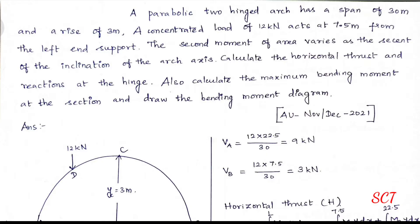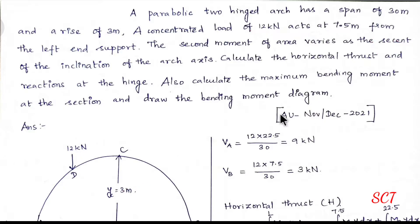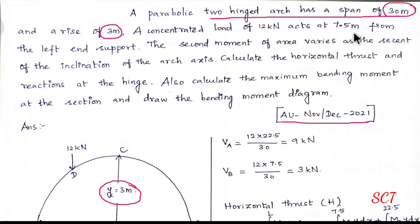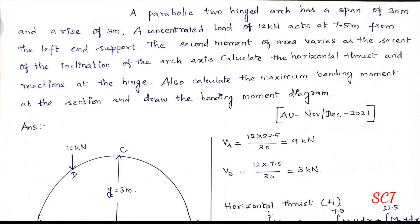Why do we have to look at the horizontal thrust? Let's look at this question. Anna University, November/December 2021. A parabolic two-hinged arch has a span of 30 meters and a central rise of 3 meters — so central rise Yc equals 3 meters. A concentrated load of 12 kN acts at 7.5 meters from the left end.